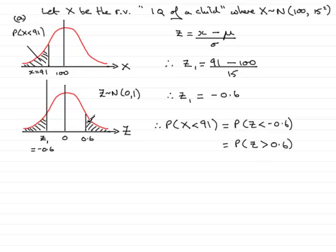But remember, the tables only look up the area to the left, but knowing that the whole area is 1, I can say that this is the same as 1 minus the probability that z is less than 0.6. And in tables, the probability of a z value being less than something is often written as phi of this particular value, 0.6.